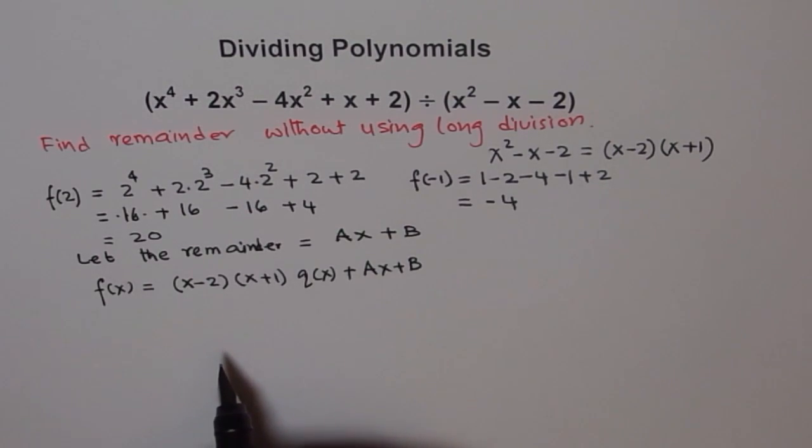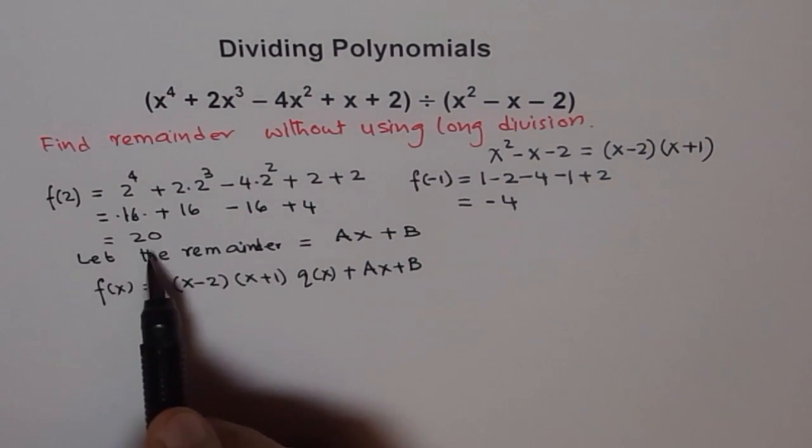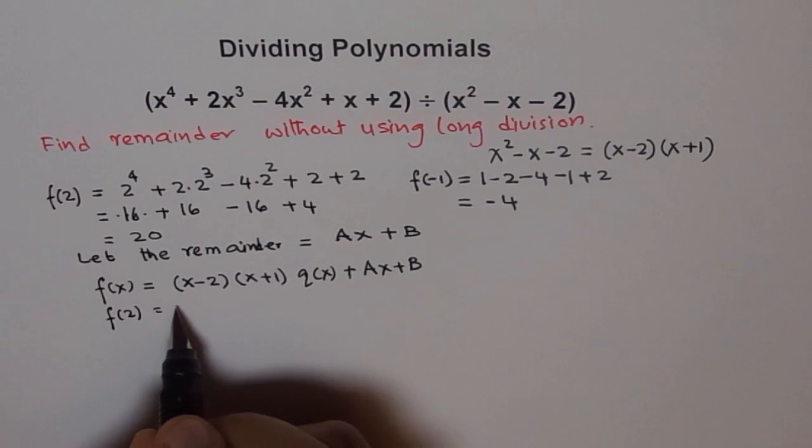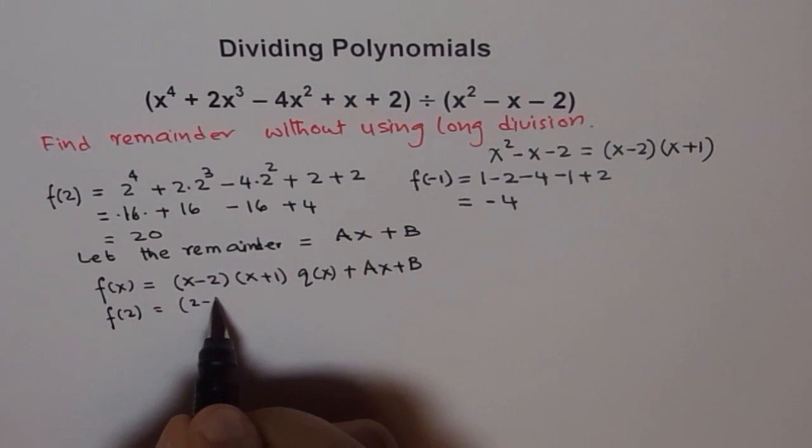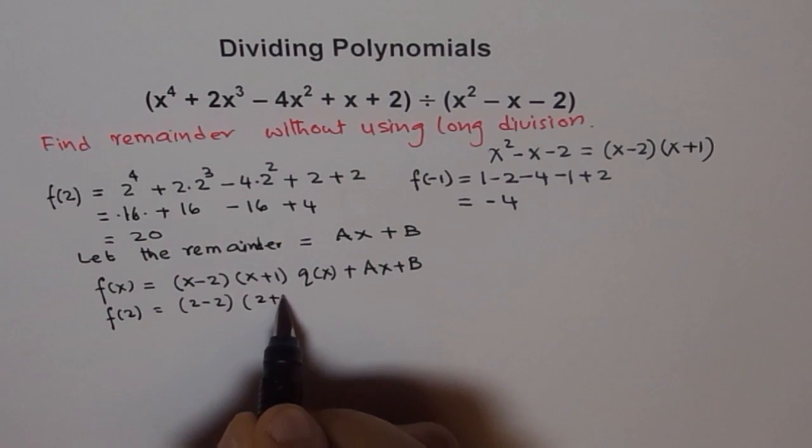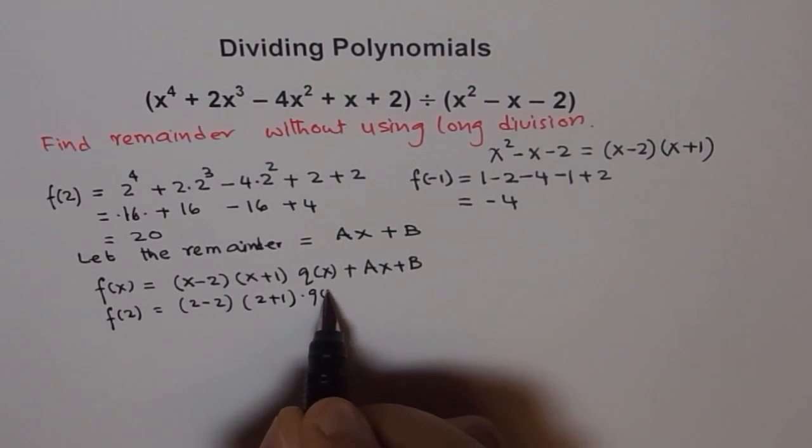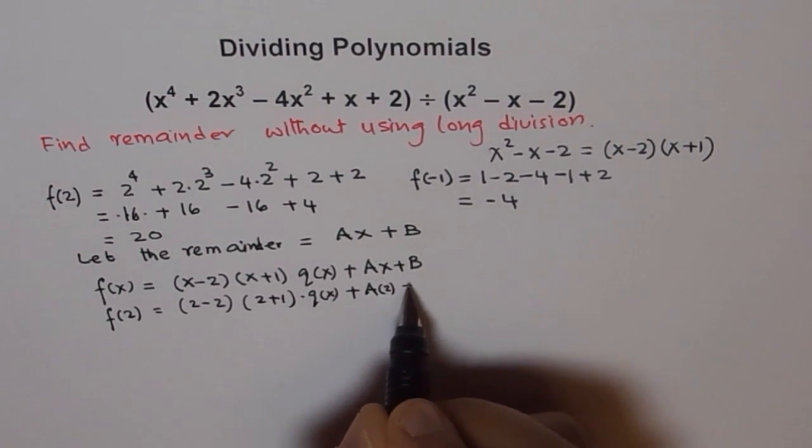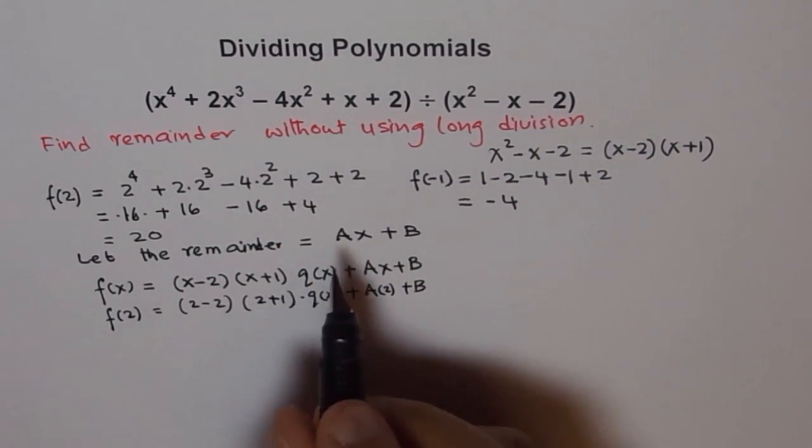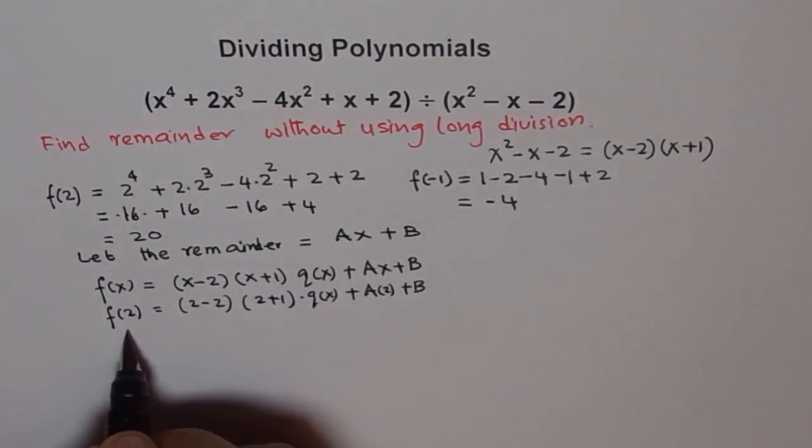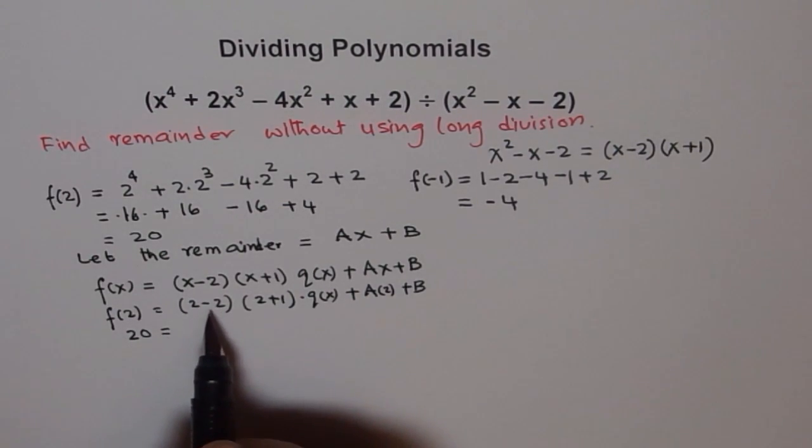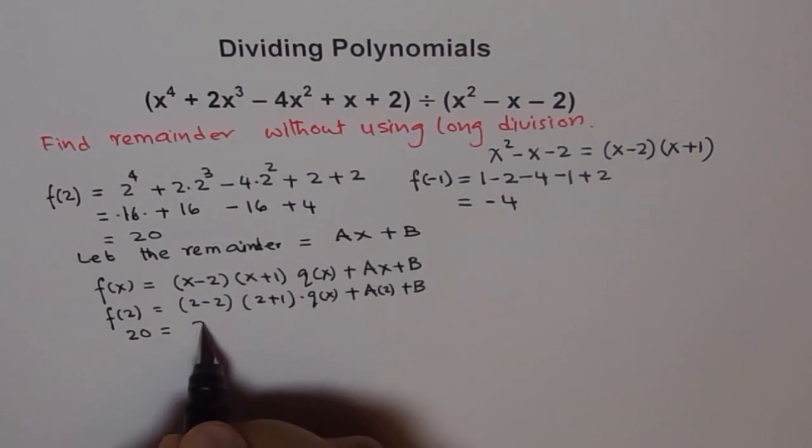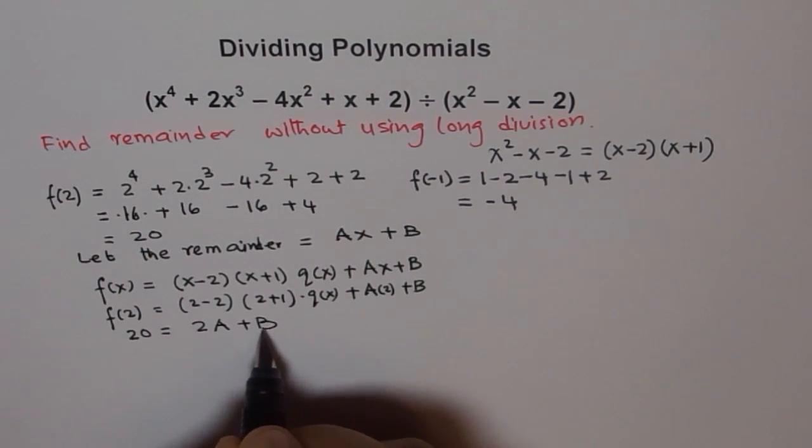Now, what should we do? We know f(2) is 20, so let's find f(2). So we see f(2) is, we'll plug in 2 here. So as soon as you plug in 2, this becomes 0. Do you see that? 2 plus 1 times q(x) plus A times 2, plus B. And f(2) is 20. So we get 20 equals to 2 - 2 is 0, 0 times anything is 0. And we are left with 2A + B.